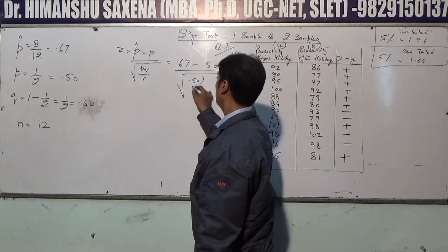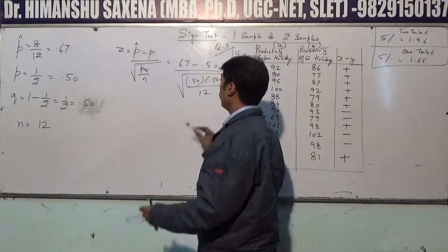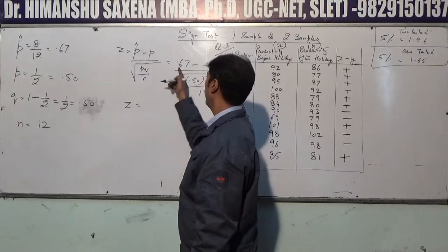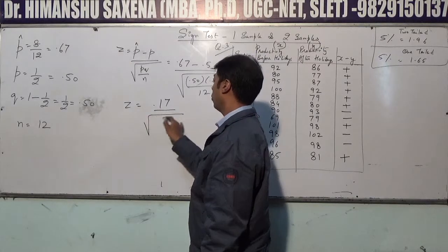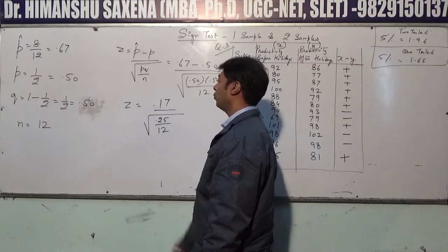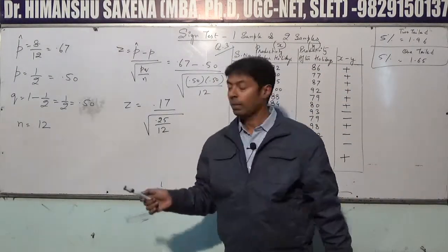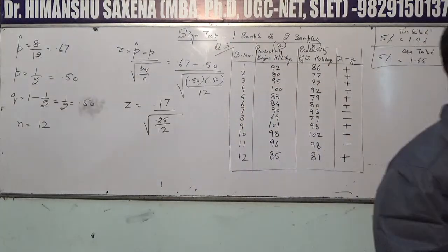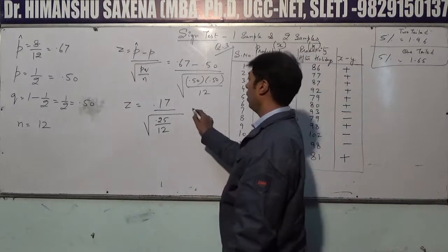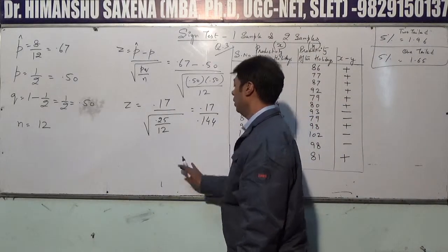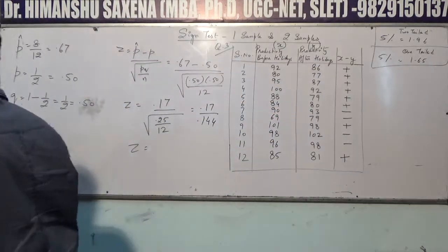Calculating Z: (0.67 − 0.50) / sqrt(0.50 × 0.50 / 12) = 0.17 / sqrt(0.25/12) = 0.17 / sqrt(0.0208) = 0.17 / 0.144 ≈ 1.18. The calculated Z value is 1.18.